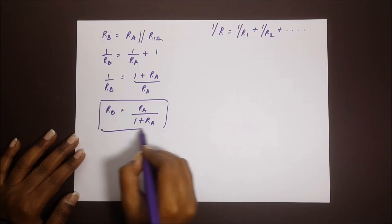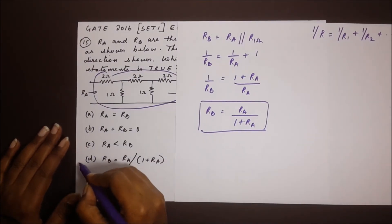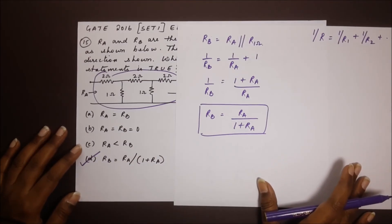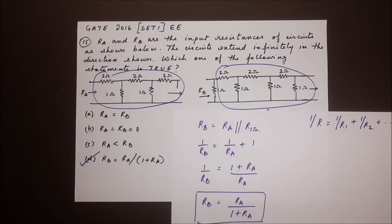And you will notice that this relation is the fourth option right here. So it all comes down to your observance of the circuits. So do keep that in mind. And I hope this has helped.